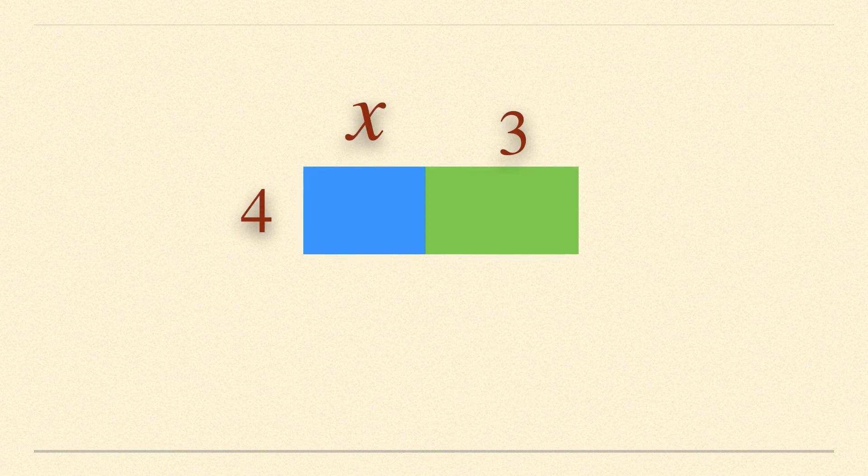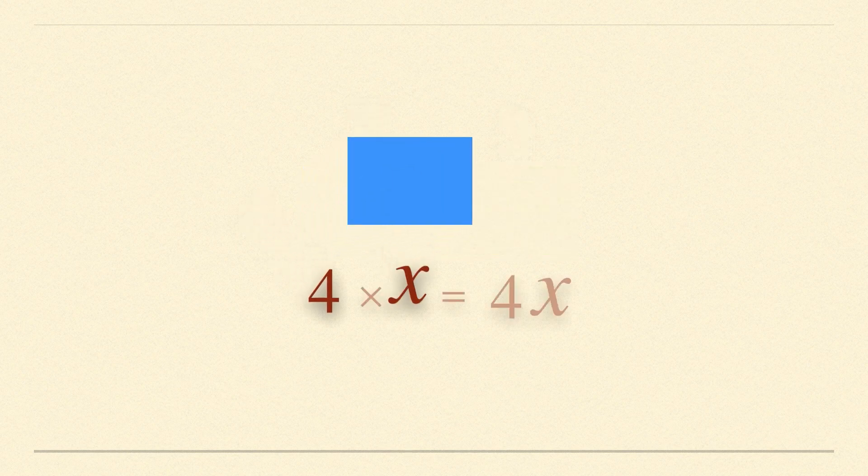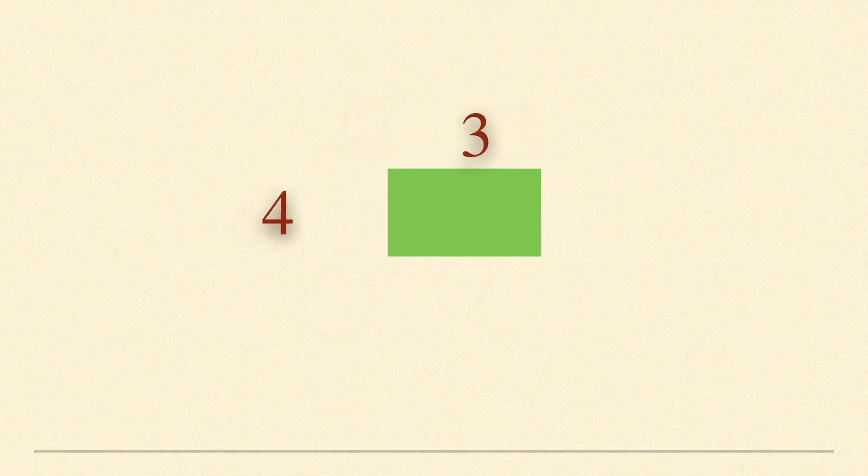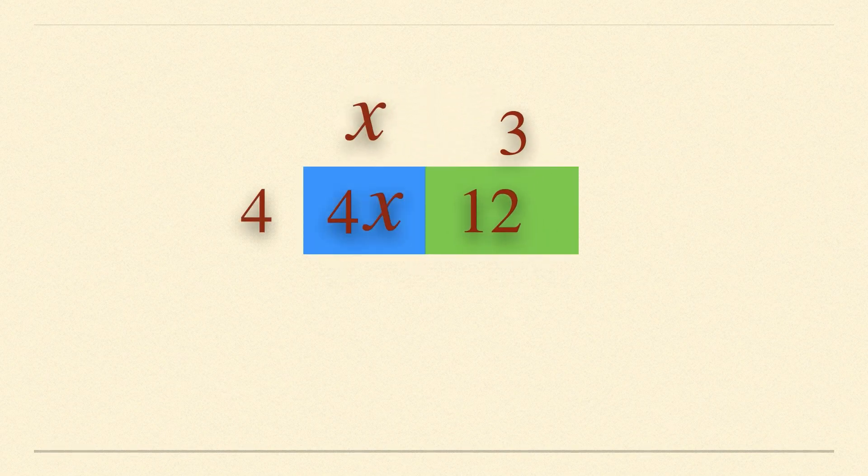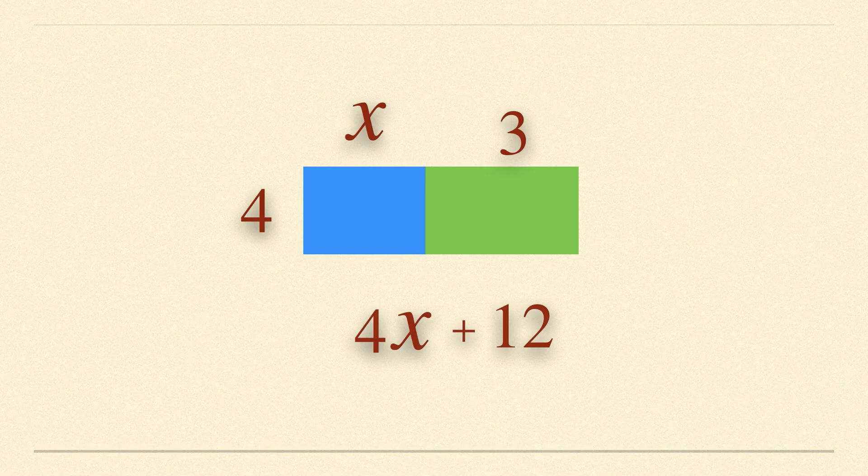Consider finding the area of this shape. The area of the blue shape is given by multiplying 4 with x which is 4x, and area of the green shape is given by multiplying 4 with 3 which gives 12. Therefore, area of the whole shape is given by the expression 4x plus 12.